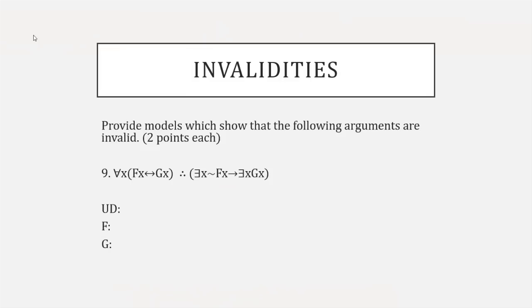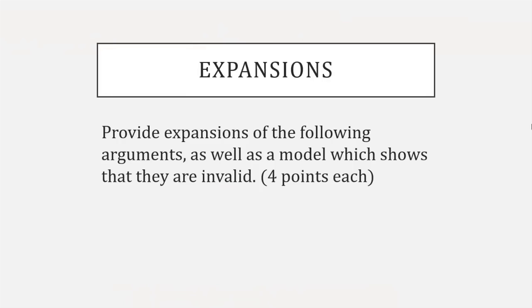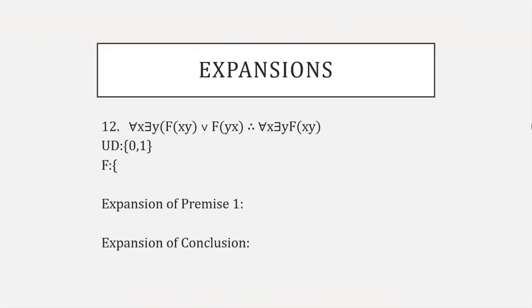That's the invalidities question — there are three of them worth two points apiece: two single-place, one multi-place. Then we're going to do expansions. The prompt reads: 'Provide expansions of the following arguments as well as a model which shows they are invalid.' You'll do the expansion and then use it to do the invalidity, just like we were doing last class. For expansions, I'll tell you ahead of time what the universe of discourse is. For every predicate, there'll be an open curly bracket for you to fill in, and then a line for the expansion of each premise and the conclusion.